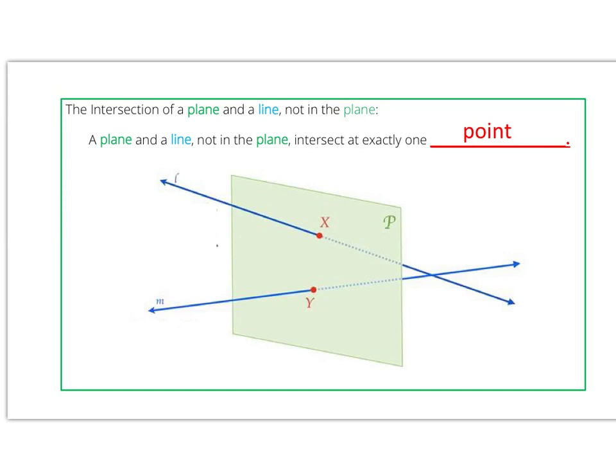Let's take a look at our specific objects here. We have plane P and line L intersecting at point X. The plane is represented by a quadrilateral, and a capital scripted letter names the plane. Notice how this line is passing through the plane.